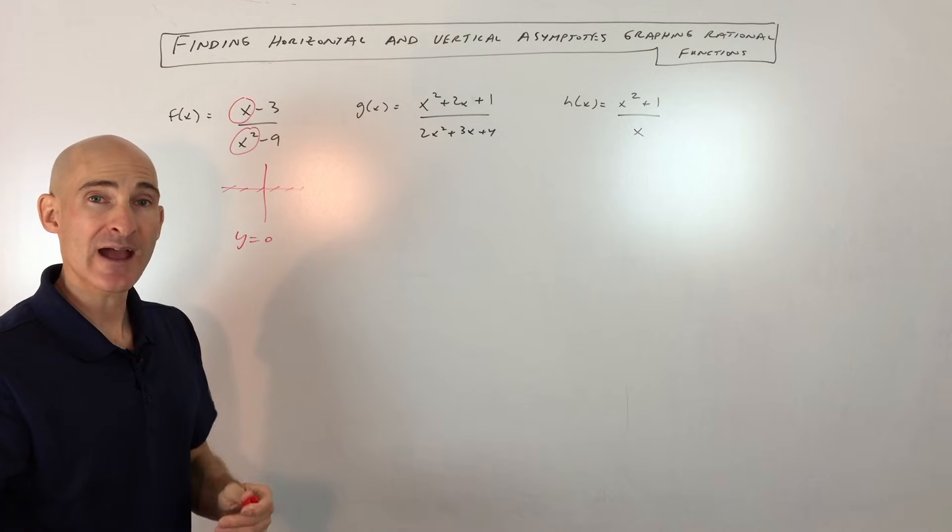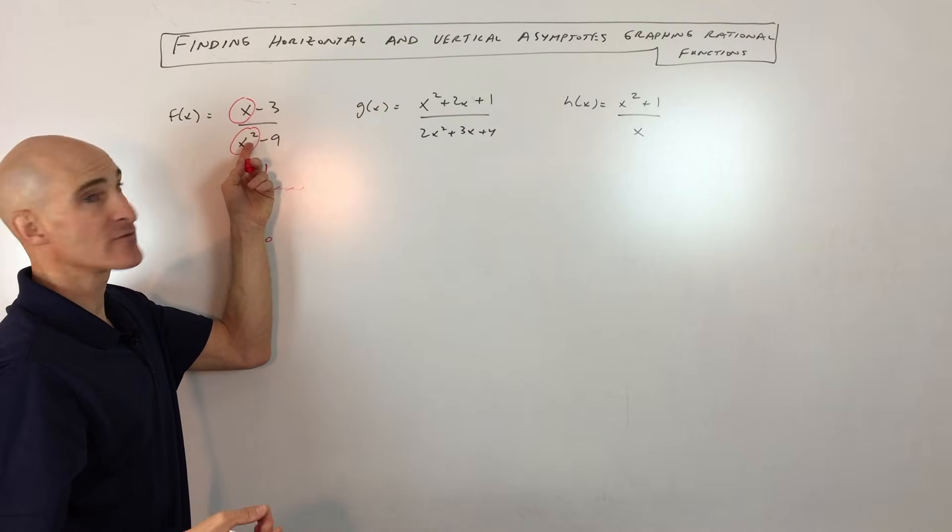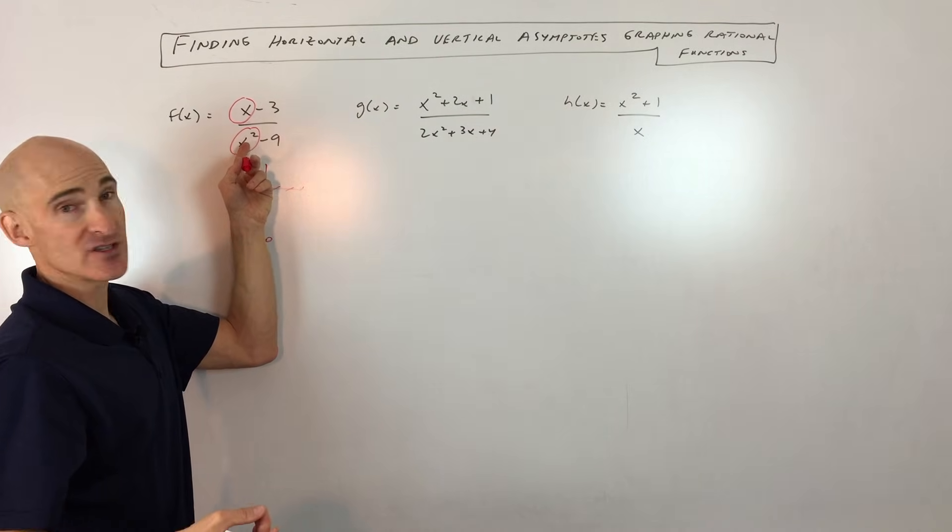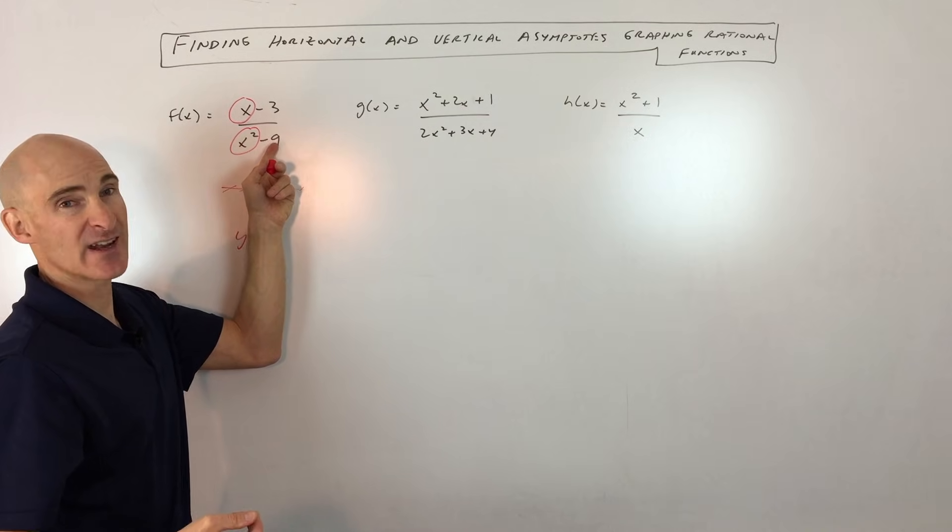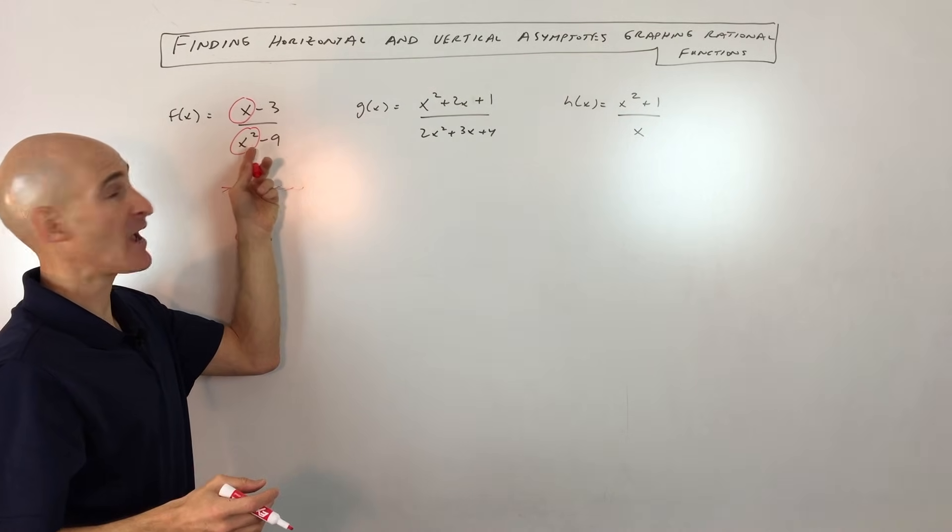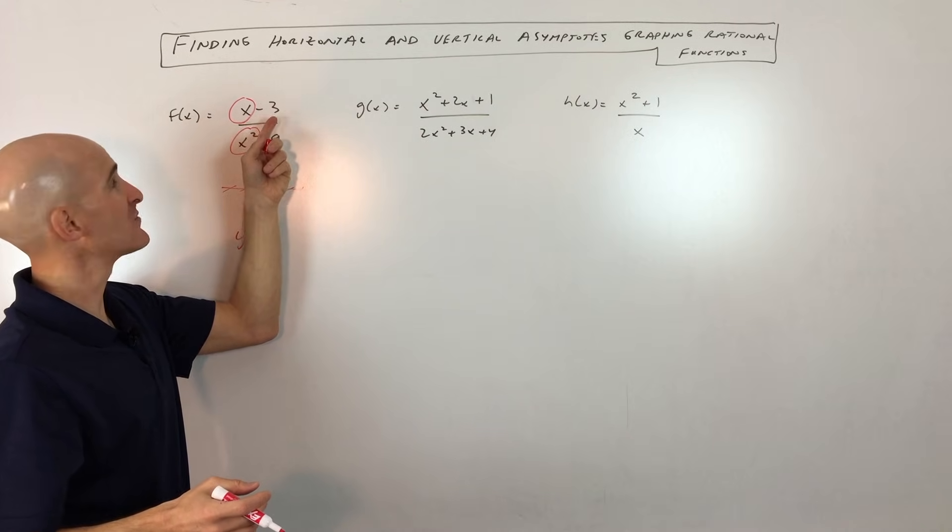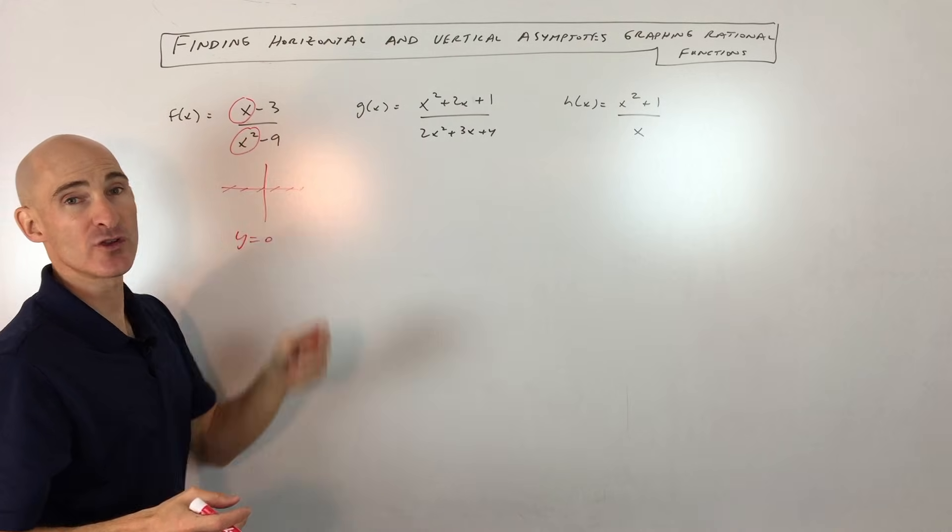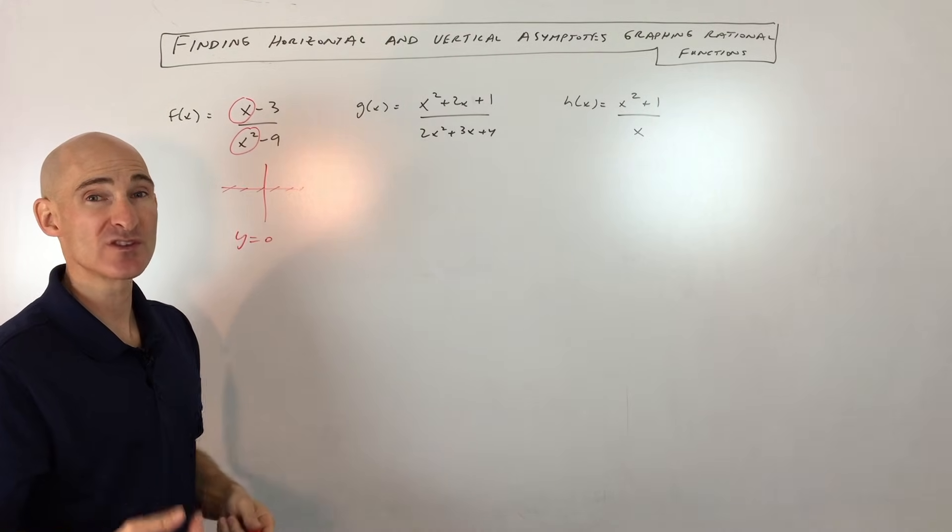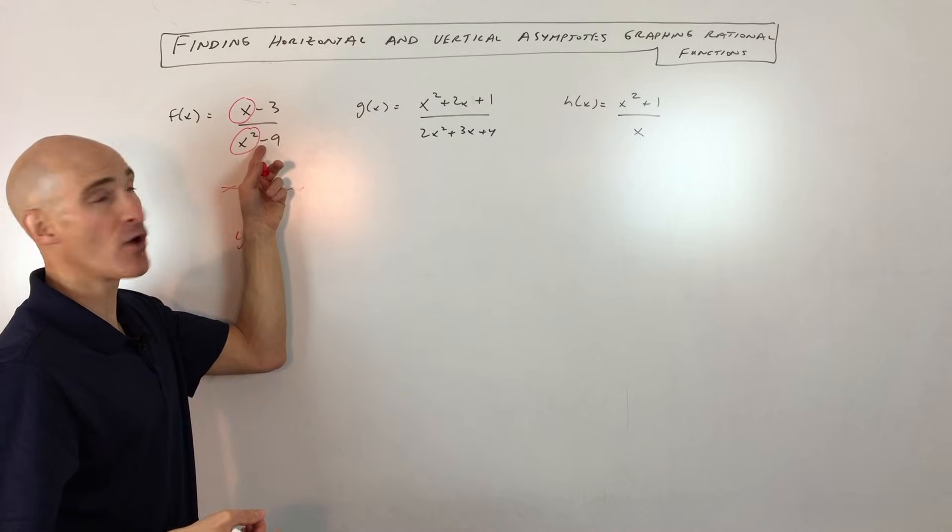Now if you're not sure or not confident about it, just go ahead and pick a large value. Say you pick a thousand. A thousand squared is a million minus nine. The nine doesn't make much of an impact, it's still about a million. And then this was a thousand. A thousand minus three, the three doesn't make much of a difference. We have a thousand over a million, which is one one thousandth, which is 0.001. So you can see it's getting very small.